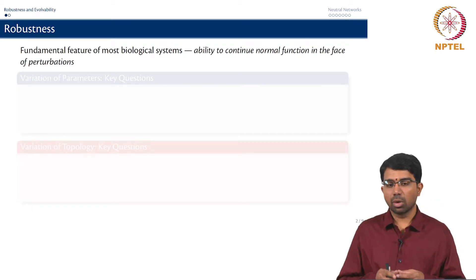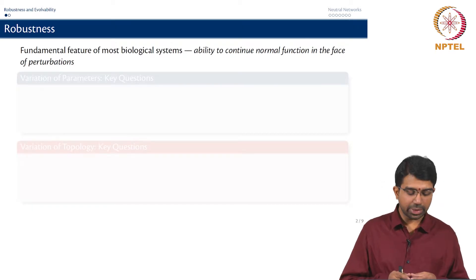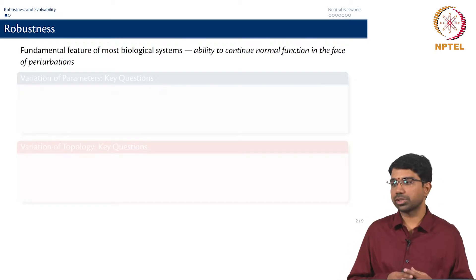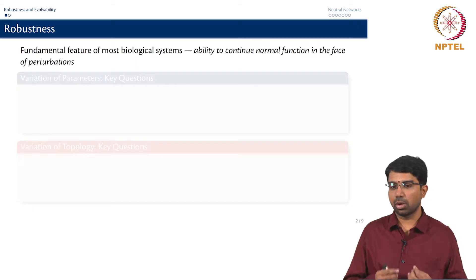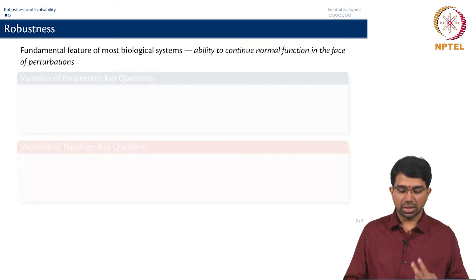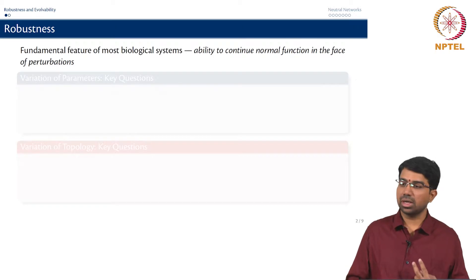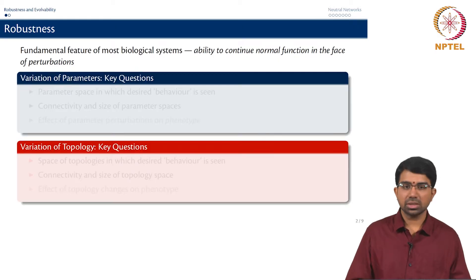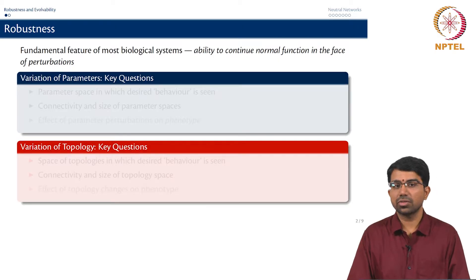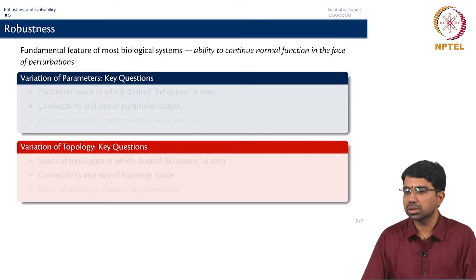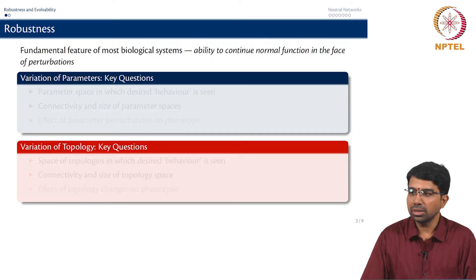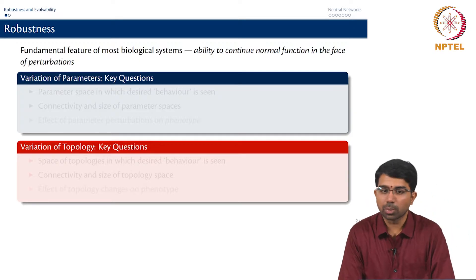If you are looking at a model, you can typically ask two questions. If you have a model of a system and you want to examine its robustness, there are two aspects you can look at. First is the variation of parameters, and the second is the variation of the topology itself.